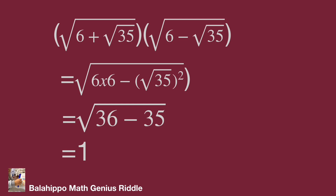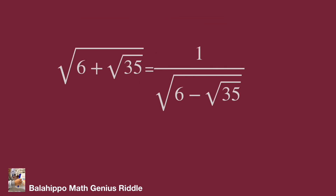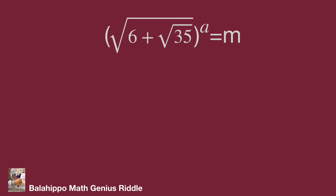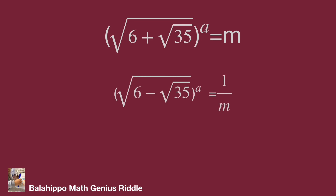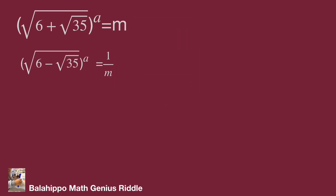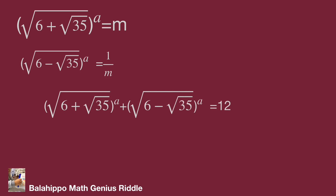That equals 1. It's a good finding. Therefore, we can say that (√6 + √35) to the power of a equals 1 over (√6 − √35) to the power of a. So let the quantity (√6 + √35) to the power of a equal to m, and (√6 − √35) to the power of a equal to 1 over m. Substituting these two quantities by m and 1/m into the given equation, we have a new equation: m + 1/m = 12.